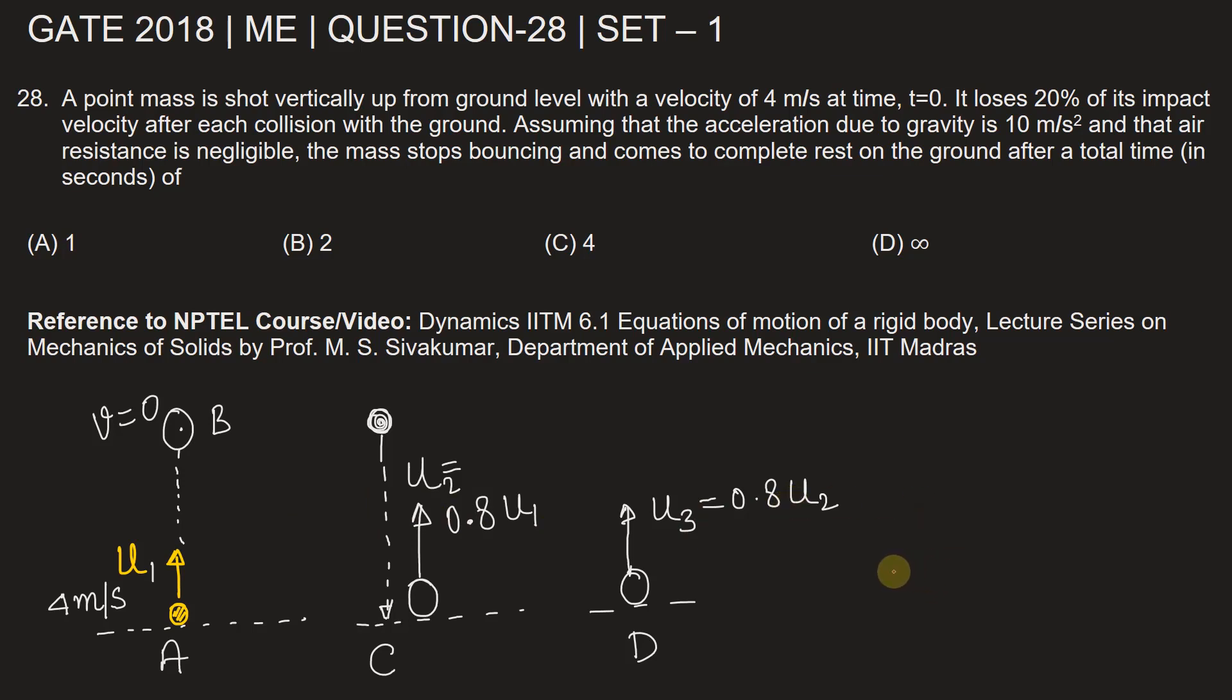So let's write u_{i+1}, where i stands for number of collisions, will be equal to 0.8 times the velocity in previous collision. So this is the relation of velocity of next collision with the previous collision.